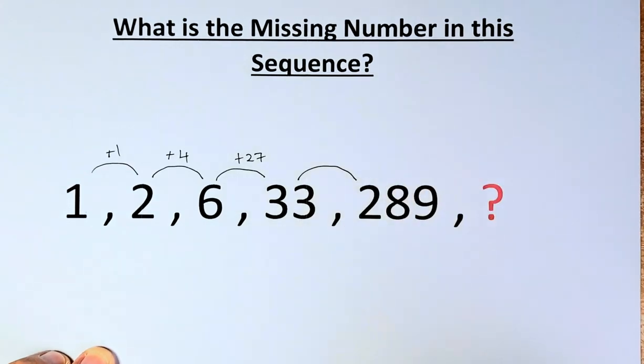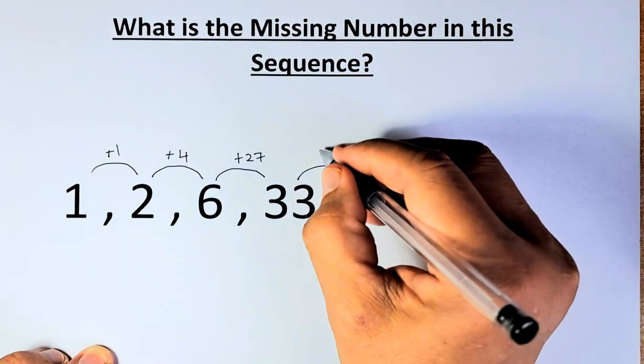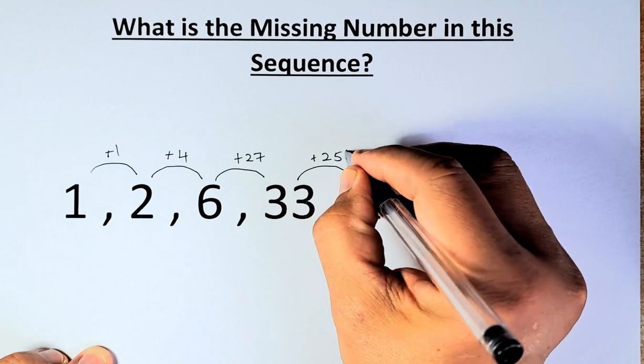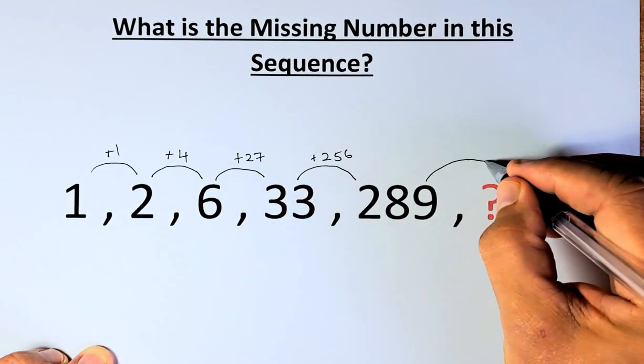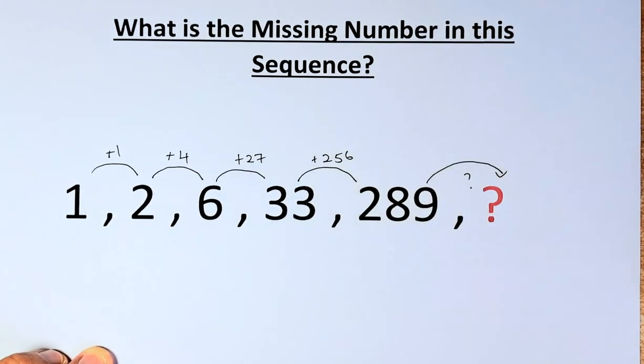33 to 289, it's a bit difficult. It's going to be actually add 256, and then you're going to add 289 to the question mark, and that is what we need to find.